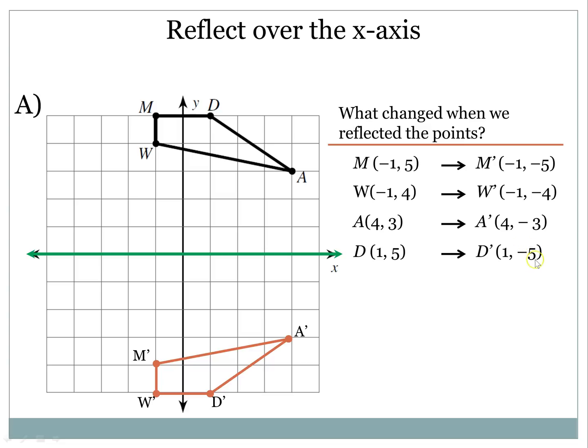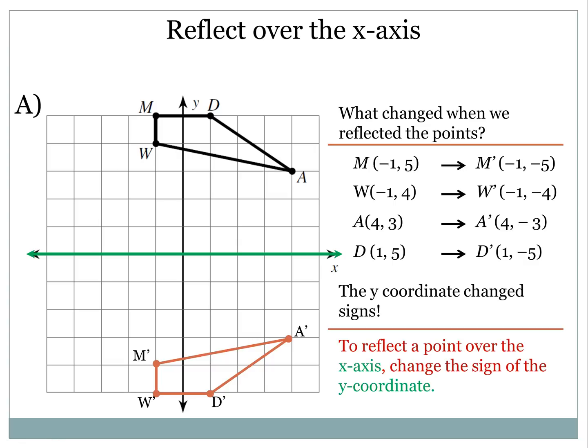and D to D-prime, it's the same coordinate. In fact, we see that the y-coordinate changed signs. So if the y-coordinate changed signs, then that means to reflect a point over the x-axis, all we have to do is change the sign of the y-coordinate.